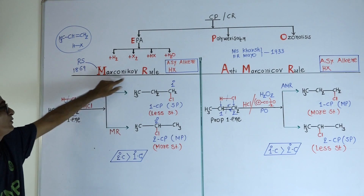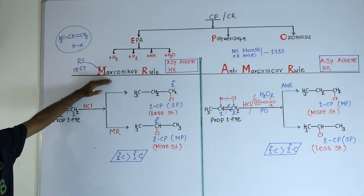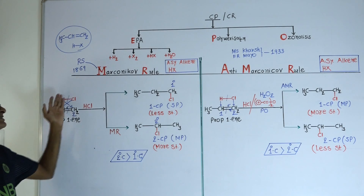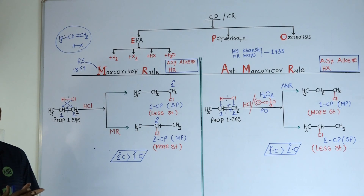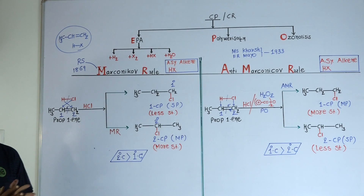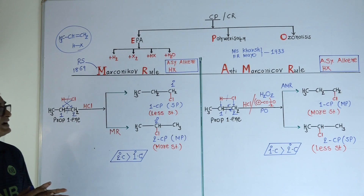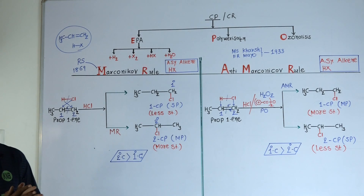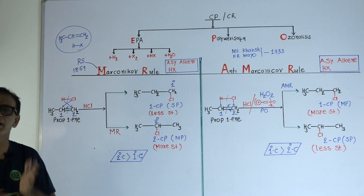This rule was given by a scientist known as Markovnikov, and in the memory of this scientist we call it the Markovnikov rule. Markovnikov was a Russian scientist who suggested the rule in 1869. The Anti-Markovnikov rule was suggested by two scientists, M.S. Kharasch and F.R. Mayo, in 1933.